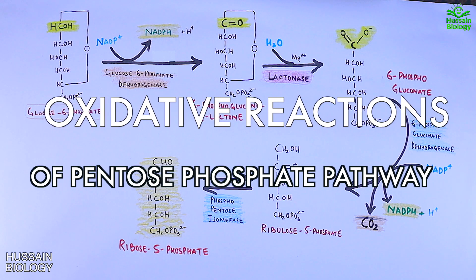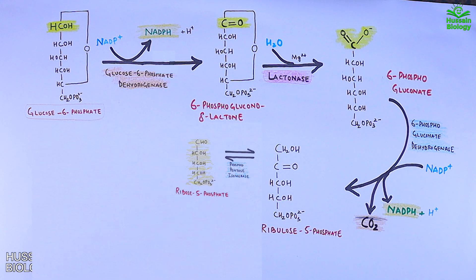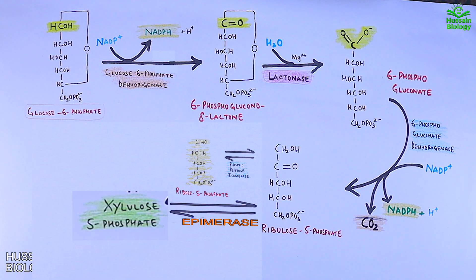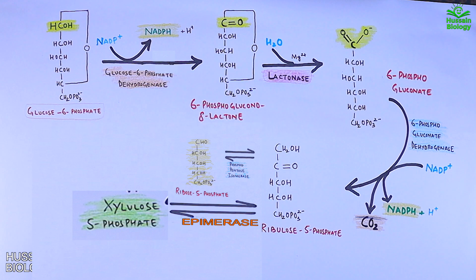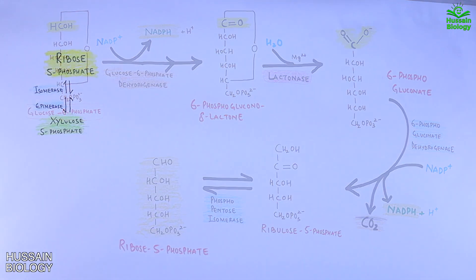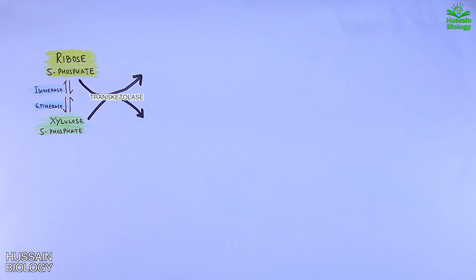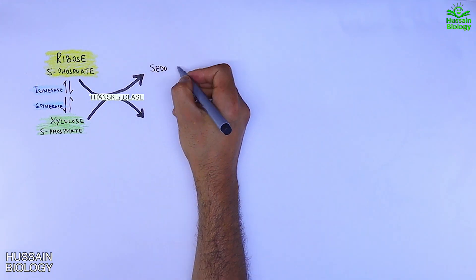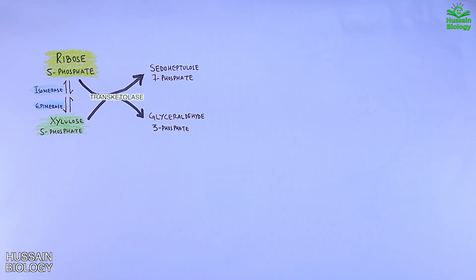Now we start the non-oxidative reactions of this pathway. First, ribulose-5-phosphate is acted upon by epimerase enzyme and converts into xylulose-5-phosphate, so now we have two products: ribose-5-phosphate and xylulose-5-phosphate. Then transketolase enzyme acts on both sugars — ribose-5-phosphate and xylulose-5-phosphate — and converts them into sedoheptulose-7-phosphate and glyceraldehyde-3-phosphate respectively.